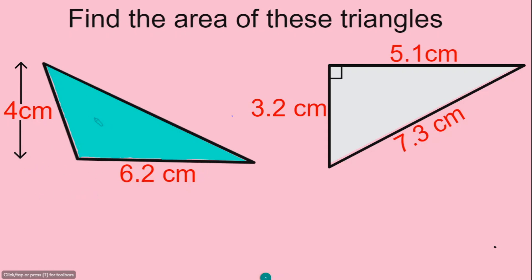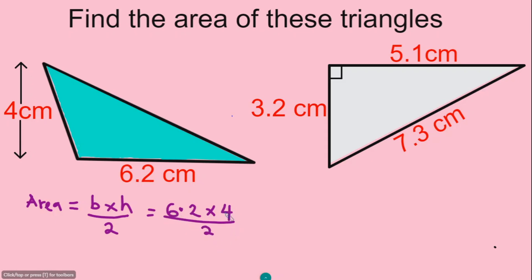To calculate the area of this blue shape, I'll begin by writing out the formula: area equals base times height divided by 2. The base is 6.2 centimeters and the vertical height is 4 centimeters, divided by 2. Multiplying 6.2 by 4 gives you 24.8, and 24.8 divided by 2 gives you 12.4 centimeters squared.